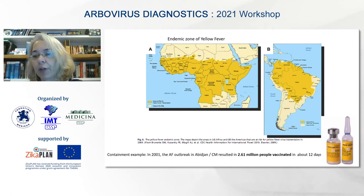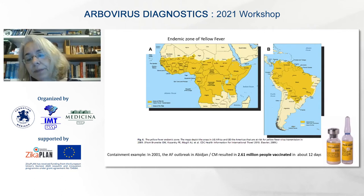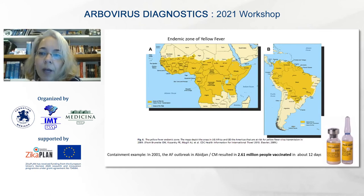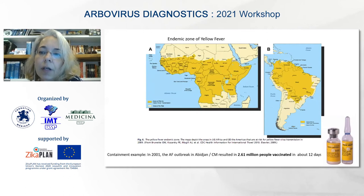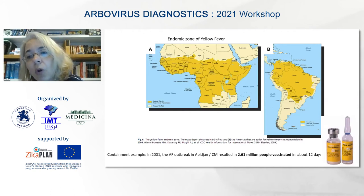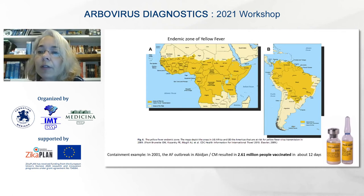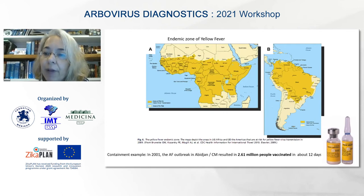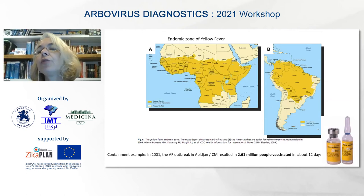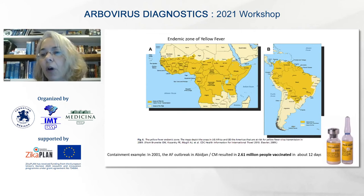Yellow fever came from Africa during the slave trade in the past. We have now controlled the urban cycle through vector control and population vaccination. But for more than 60 years it was thought of as an old disease, and it has re-emerged recently. We know how to control the vector, the disease is just in the sylvatic cycle, and we have a vaccine — so it is possible to control. It happened: we also had to vaccinate all of Brazil's population recently because of the outbreak, but it is possible.